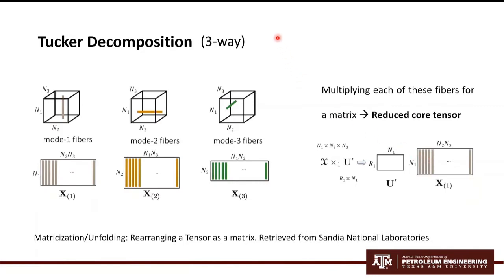One of the first steps in Tucker Decomposition is to unfold the tensor. The reason why we do that is because it's easier to think in a matrix form rather than a tensor array. The main idea is to work with only a 1D structure of the tensor. We need to multiply each of these fibers that you can see here for a matrix in order to obtain a reduced core tensor or reduced matrix.